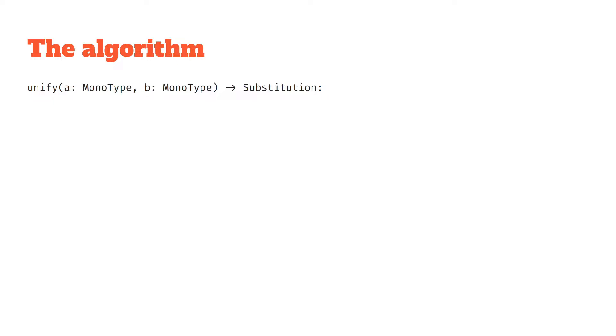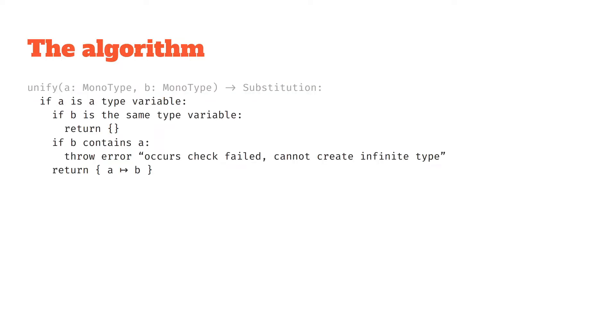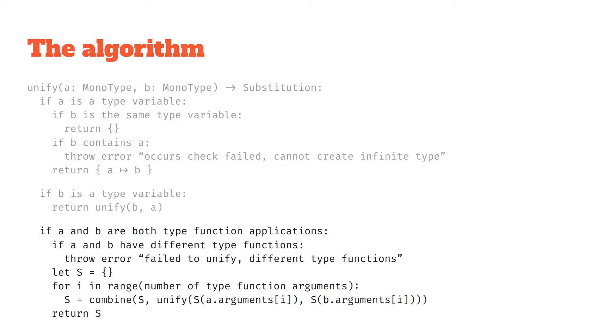So there's three main chunks to this algorithm. We're going to go through them in detail in a bit, but basically the first chunk deals with the case of type variables and what we do if there's a type variable. The second chunk is somewhat simpler because unify is commutative, we kind of exploit this to not have to write some other if statements and deal with type variables there. And finally we deal with type function applications, which is the only other case that we have, and we unify those. That's what our algorithm looks like.